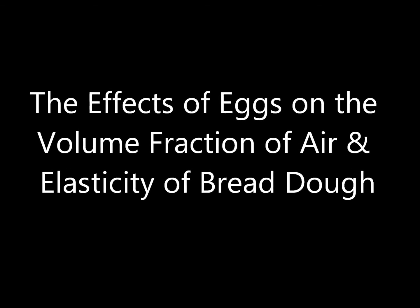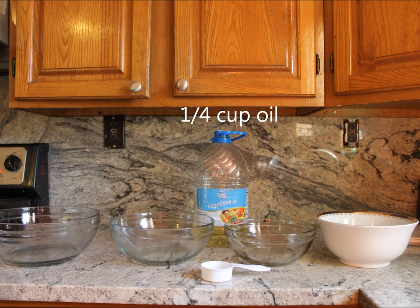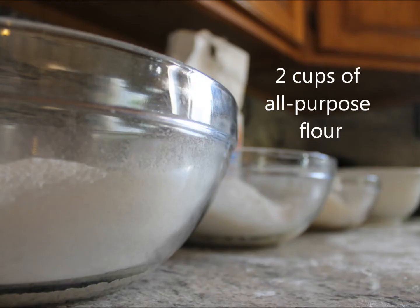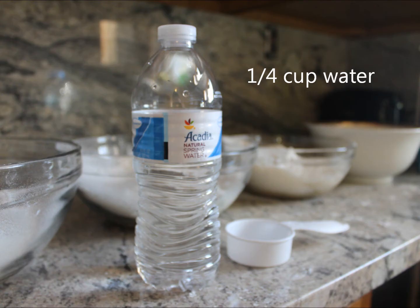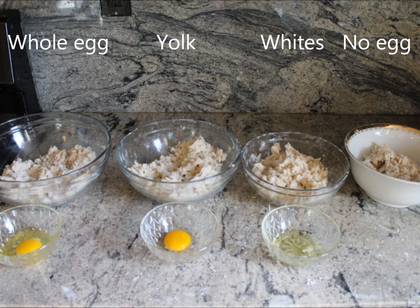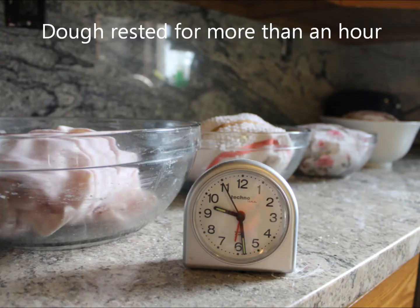For each of the four doughs, I used a quarter cup of oil, two cups of flour, one teaspoon sugar, a quarter cup of water. The first dough had a whole egg, the second an egg yolk, the third an egg white, and the fourth had no eggs at all.